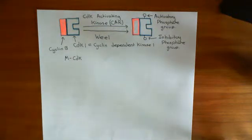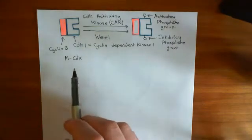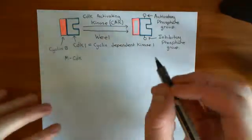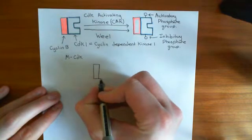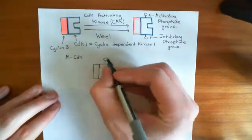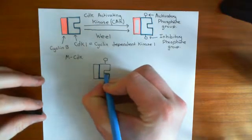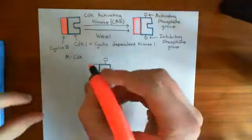Welcome back to this next video on mitosis. We're in the process of discussing how you get a positive feedback in the rise of MCDK at the start of the M phase of the cell cycle. At the start of the M phase, the levels of this active MCDK go up. An active MCDK is a CDK1 enzyme bound with cyclin B and also with this activatory phosphate group. So if the level of this goes up by a little amount, it's going to trigger the level to go up even more — a positive feedback — which is how you get such a rapid rise in it.